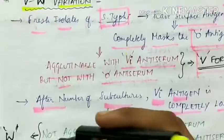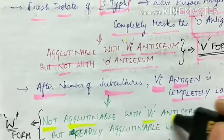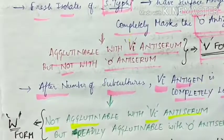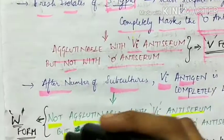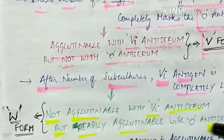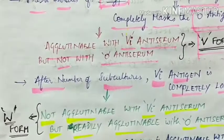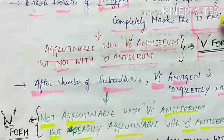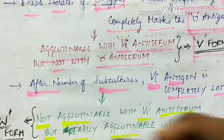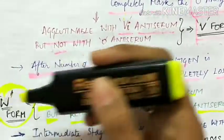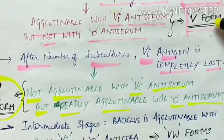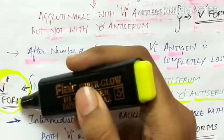After number of subcultures, the Vi antigen is completely lost. So now these subcultures are not agglutinable with Vi antigen as the Vi antigen is completely lost, but they are readily agglutinable with O antigen as O antigen is visible. Such forms are called as W forms.